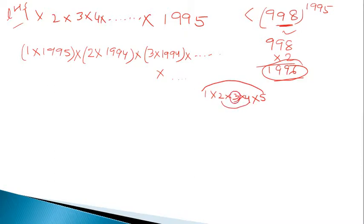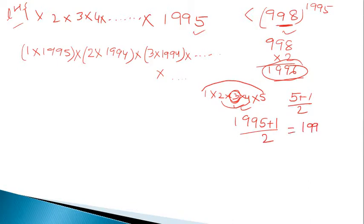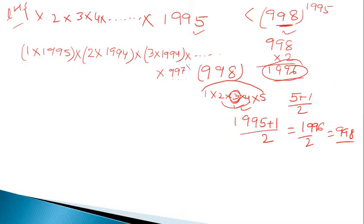With 5 total terms, the middle term is found by (5+1)/2 = 3. In the same way, for our series up to 1995, the middle term is (1995+1)/2 = 1996/2 = 998. So the middle term is 998, and just before it we have 997 × 999.